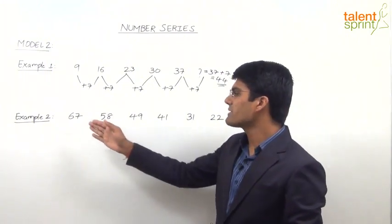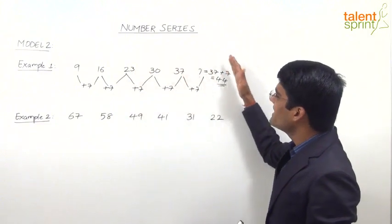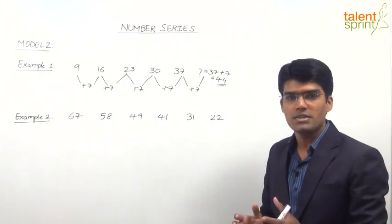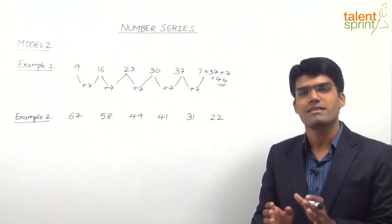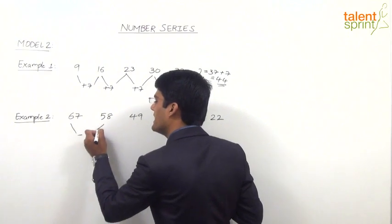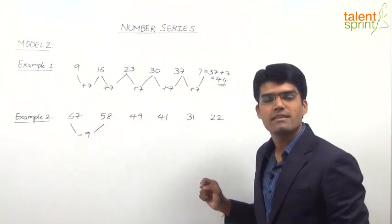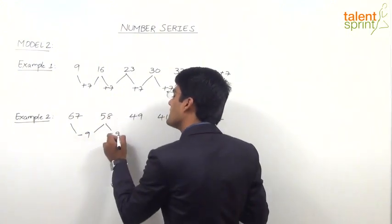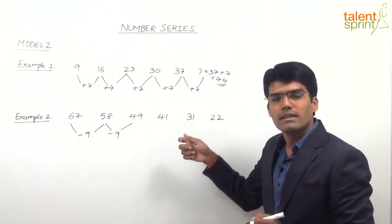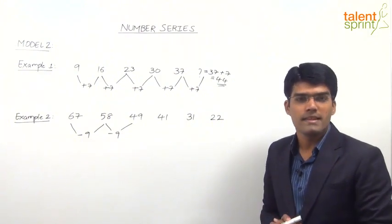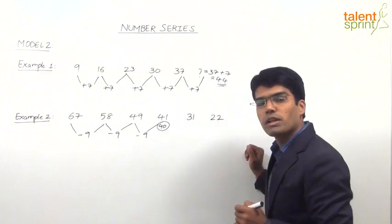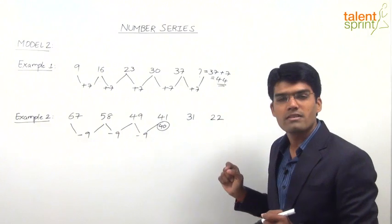This is a decreasing series — the numbers decrease gradually. Let us observe the differences between consecutive numbers. 67 minus 9 equals 58, and 58 minus 9 is 49. So the difference appears to be minus 9. However, 49 minus 9 should give us 40, but the given number is 41. So maybe 41 is the wrong number, but we need to confirm by checking the remaining terms.